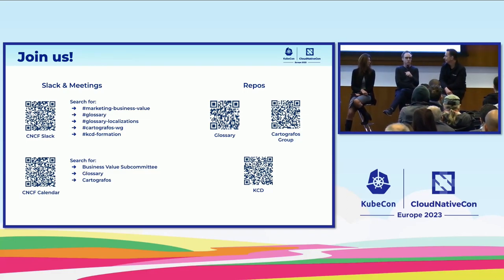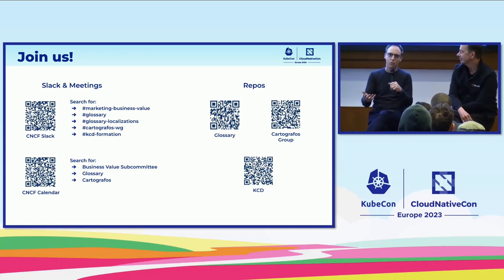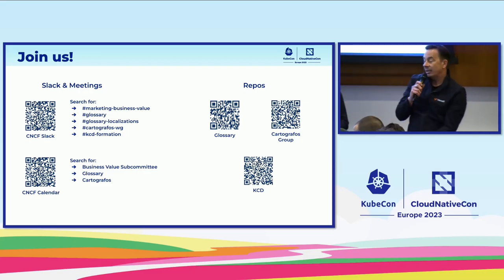If somebody has an idea for a resource, what can people do? They can reach out to us directly — hopefully we're visible. If you have an idea for a resource, something that you think solves a particular pain point, or something you've come across yourself, please just reach out. Slack is very active within the CNCF — we're all on Slack. You can attend a Business Value Subcommittee meeting every third Wednesday of the month, and you can use the CNCF website to find out when those meetings are taking place.